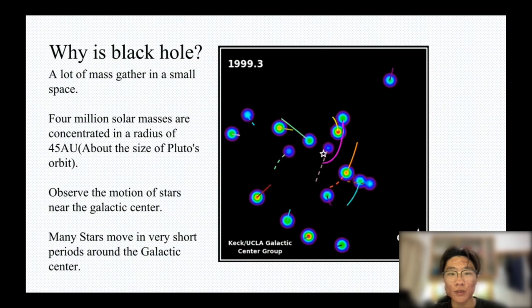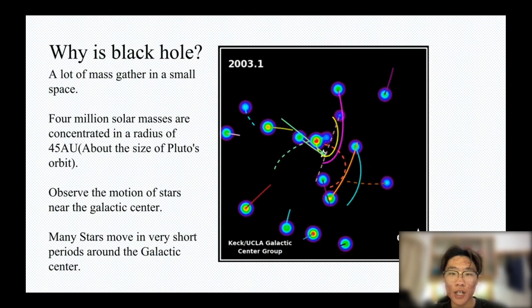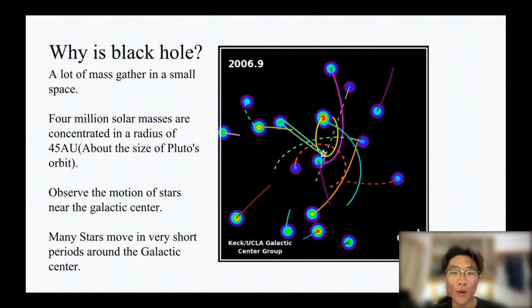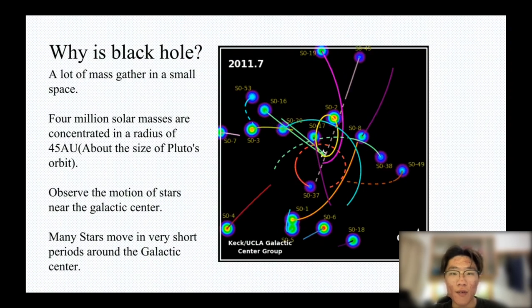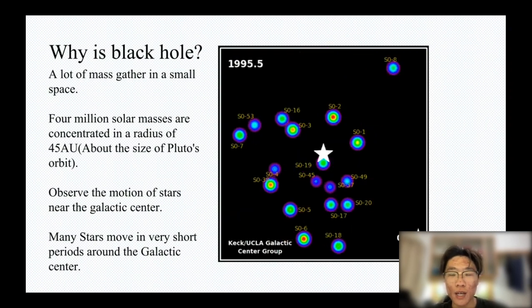Besides, by observing the motion of a large number of stars around the galactic center, they found that these massive stars have a very short motion period, just like this GIF figure.